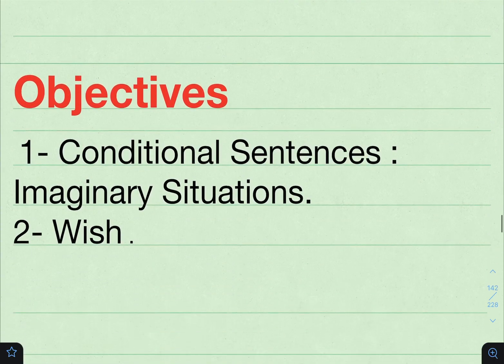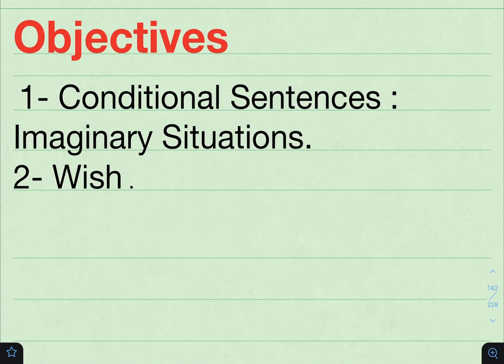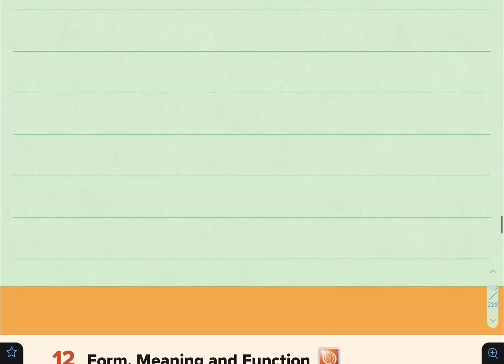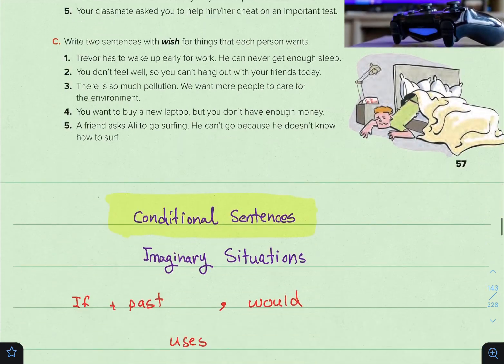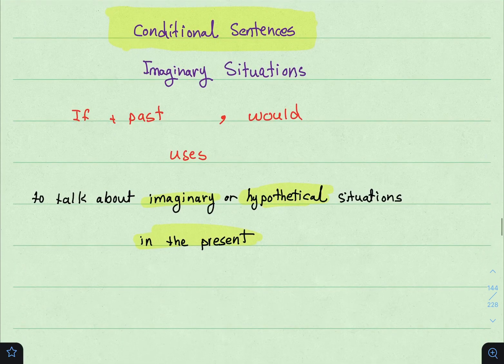So right now let's take a look at the objectives. Number one: conditional sentences, imaginary situations. And number two: wish. So right now, please move on to page number 57, 12:4, Meaning and Function. The first thing we will be looking at is conditional sentences, imaginary situations — الجمل الشرطية في المواقف الخيالية.